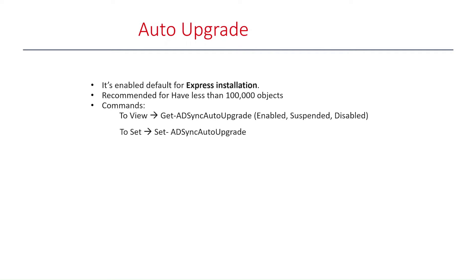Automatic upgrade is a feature that regularly checks for newer versions of Azure AD Connect. If your server is enabled for automatic upgrade and a newer version is found for which your server is eligible, it will perform an automatic upgrade to that newer version. It is enabled by default for all express installations and is recommended for environments with fewer than 100,000 objects in the metaverse.